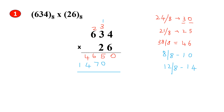Now add these two partial products. You write 0. Then 5 plus 0 is 5. Then 6 plus 7 is 13. 13 is not an octal number, so divide by 8. We get quotient 1 and remainder 5. Put 5 as the sum and carry is 1.